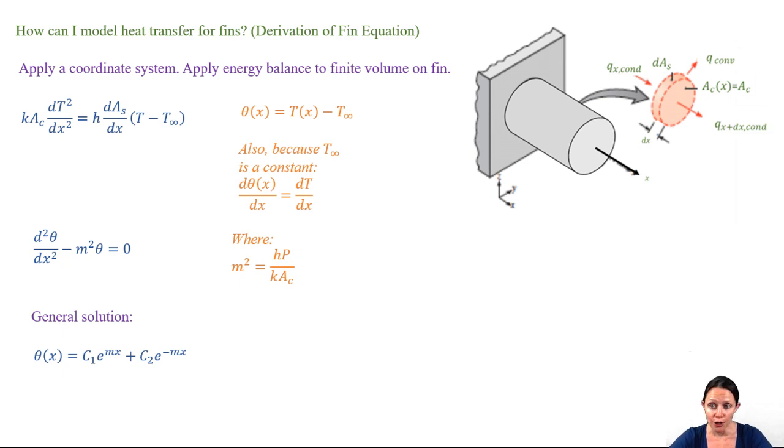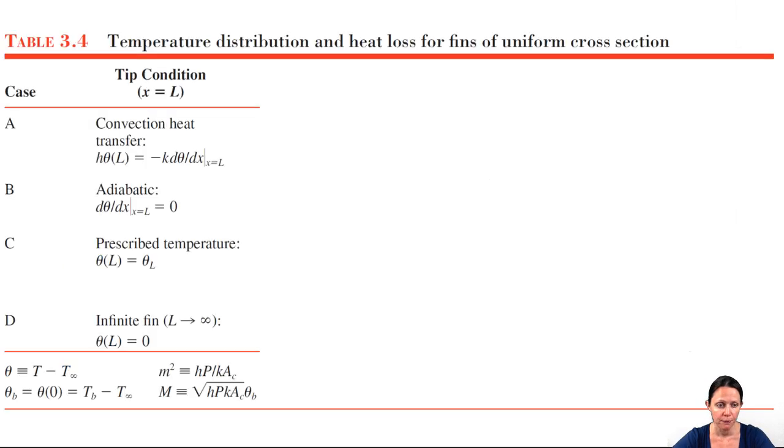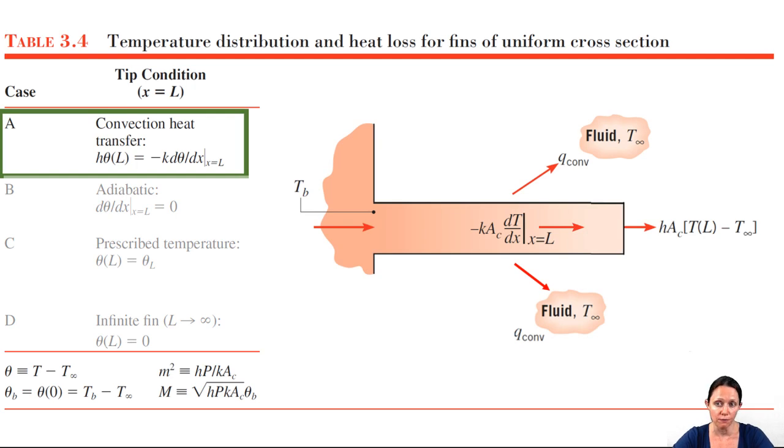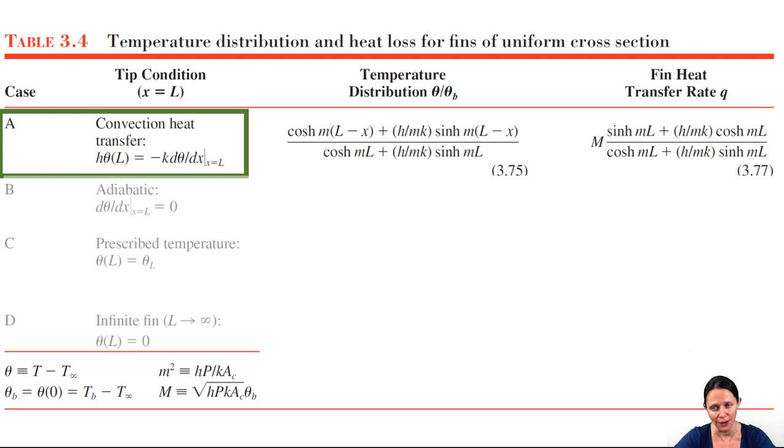The particular solution to this problem will depend on your boundary conditions. We need two boundary conditions. The first is the same for every case we'll look at in this class. It defines theta at the base as theta b. Table 3.4 in your book gives us four different cases for the other boundary condition. Let's walk through them one at a time. Case A takes into consideration that in addition to the convection along the length of the fin through the surface area, you also have a small amount of heat transfer through the tip. So doing a surface energy balance at the tip and defining the conduction at the tip as being equal to the convection at the tip, we could derive the following expressions.